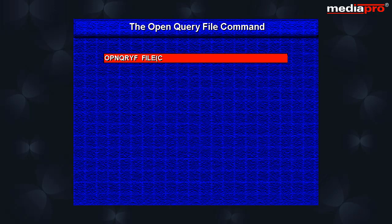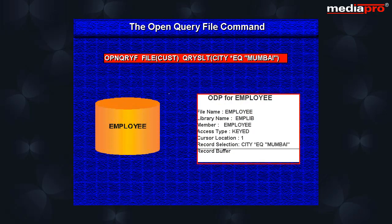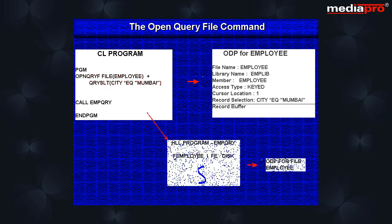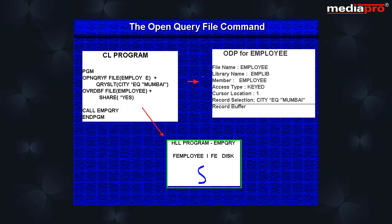The open query file command creates an open data path for the database file based on the various parameters specified with the command. The open query file command should precede the file open statement of the HLL program. Before the HLL program opens the database file, an override database file command should be issued with the share parameter set to star yes.